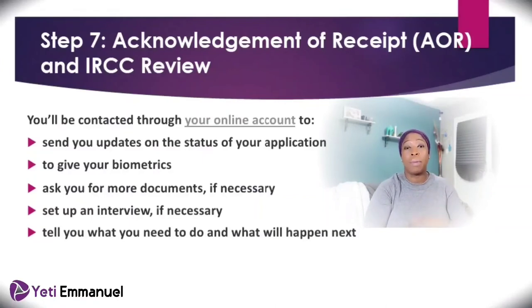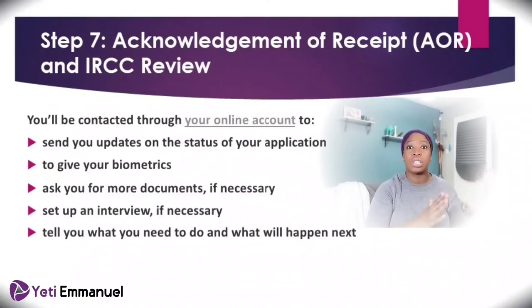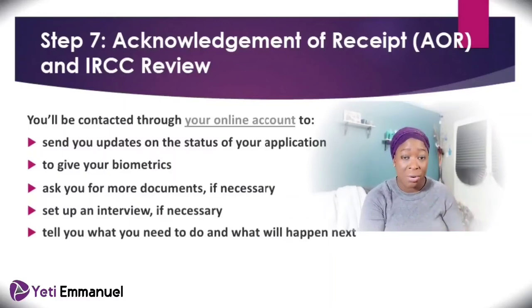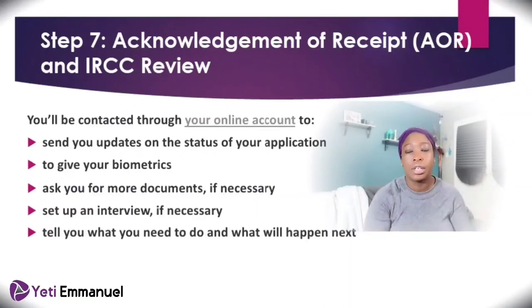They'll also ask you to give your biometrics — your photo and fingerprints. This is required if you're between 14 and 79 years old. You have 30 days to do it, so make sure you complete it within the timeframe. If they don't understand something in your documents or need clarification, they may ask for more documents. Once they've reviewed everything and are satisfied, they'll proceed with your visa approval and stamping — you'll receive an email and a notification through your profile confirming your approval.